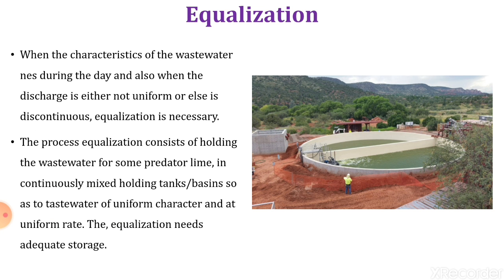In short, if the flow is not continuous and as the characteristics of industrial wastewater change from time to time, there should be equalization of pH content, temperature, acidity, alkalinity and other parameters. To equalize these to a common concentration, equalization is required. Such basins are constructed where equalization is carried out.